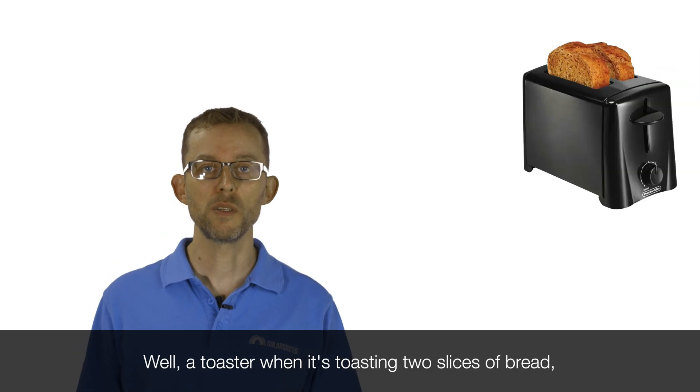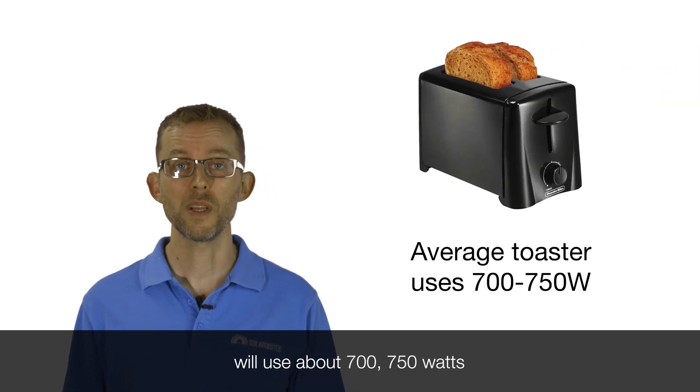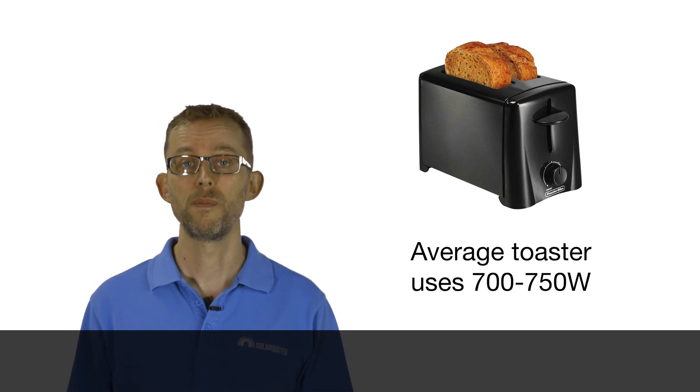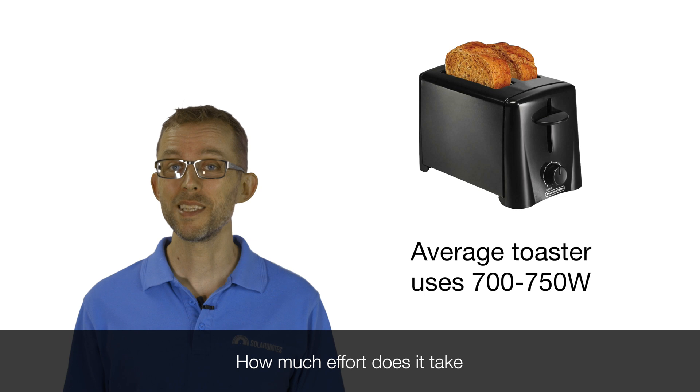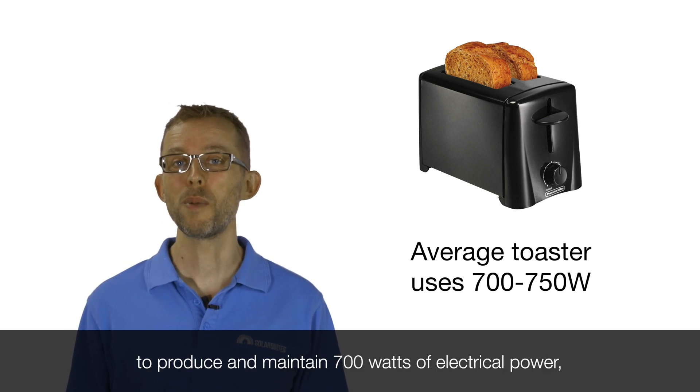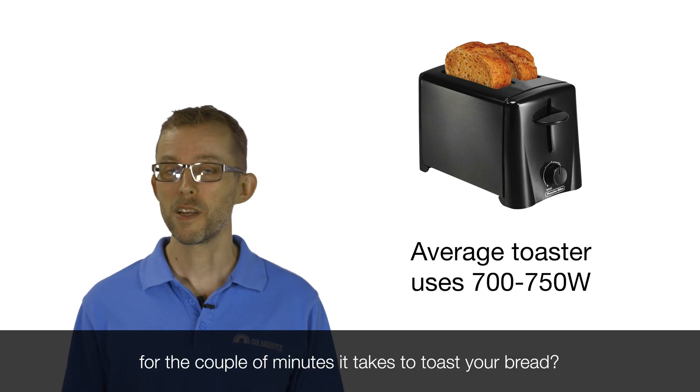Well, a toaster, when it's toasting two slices of bread, will use about 700, 750 watts to get your bread brown. How much effort does it take to produce and maintain 700 watts of electrical power for the couple of minutes it takes to toast your bread?